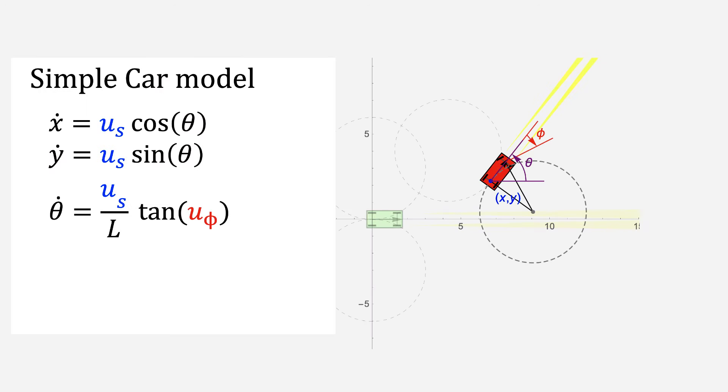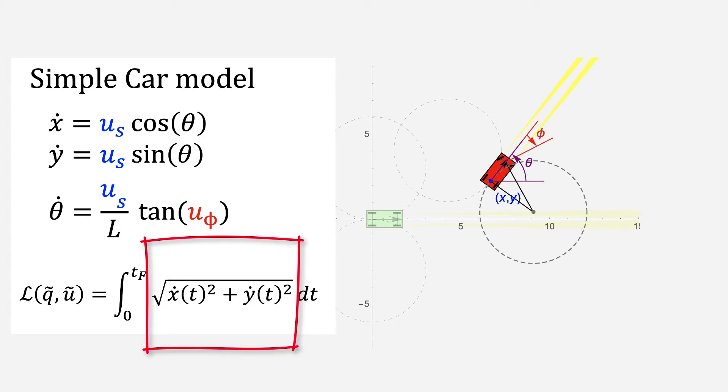We can write that as a cost functional that gives the length of the path. We integrate from time 0 to time tf. This root expression is the length of each path segment.